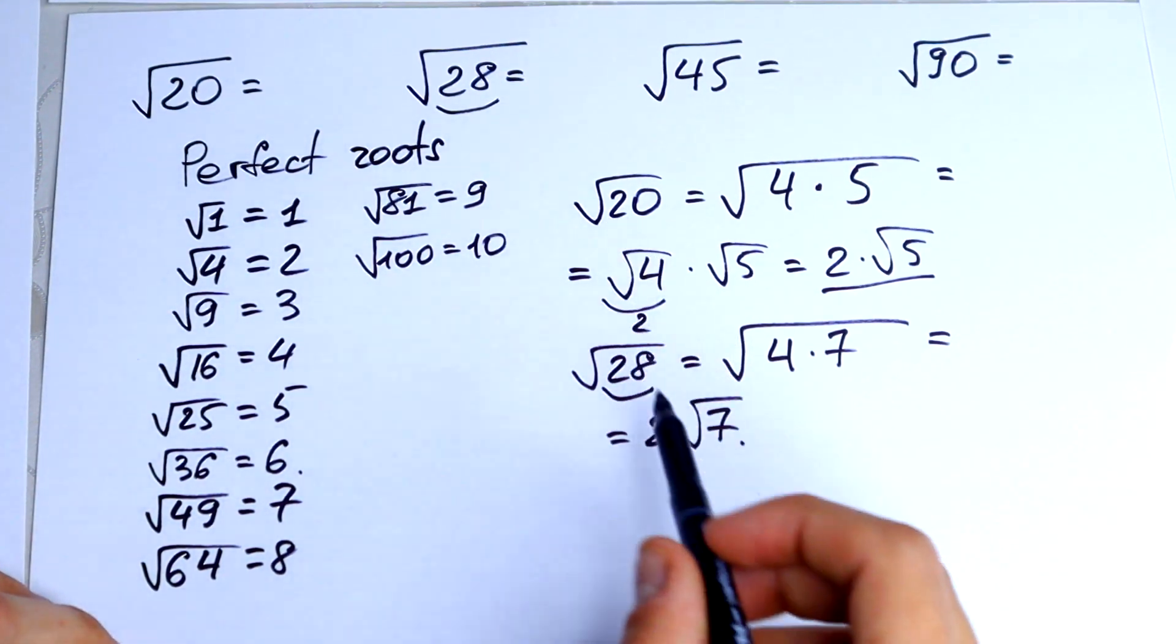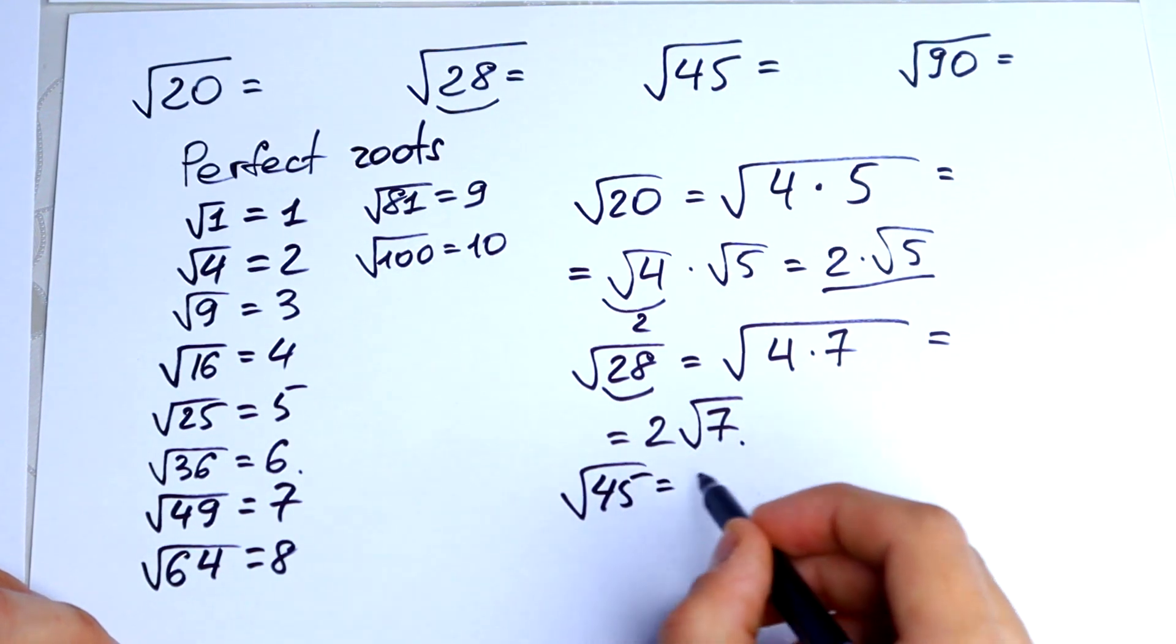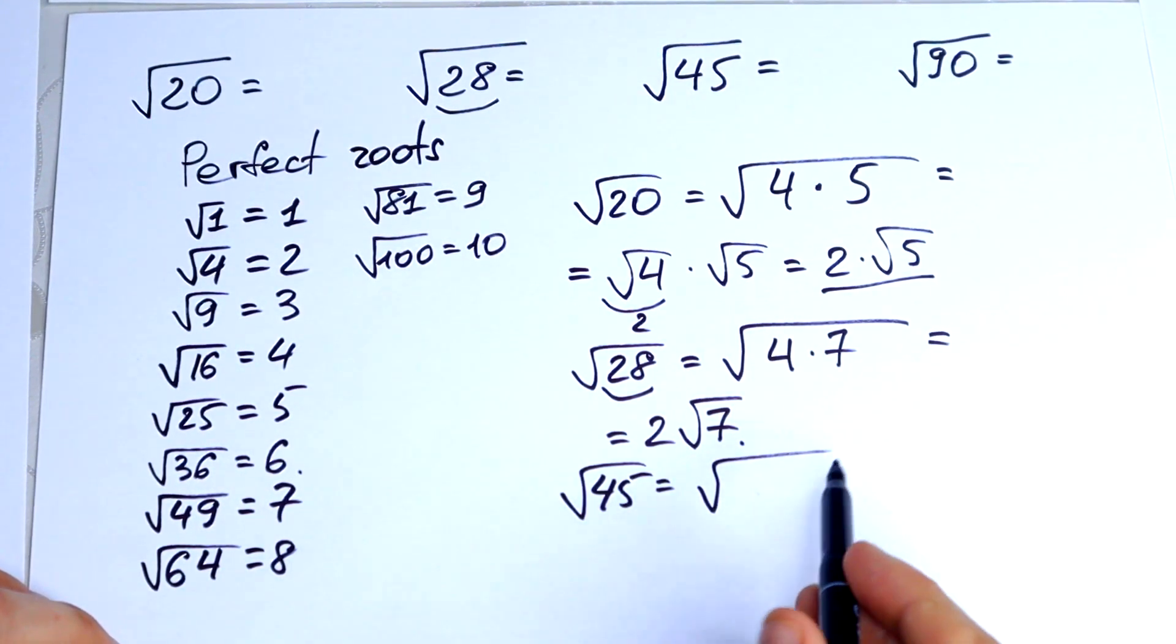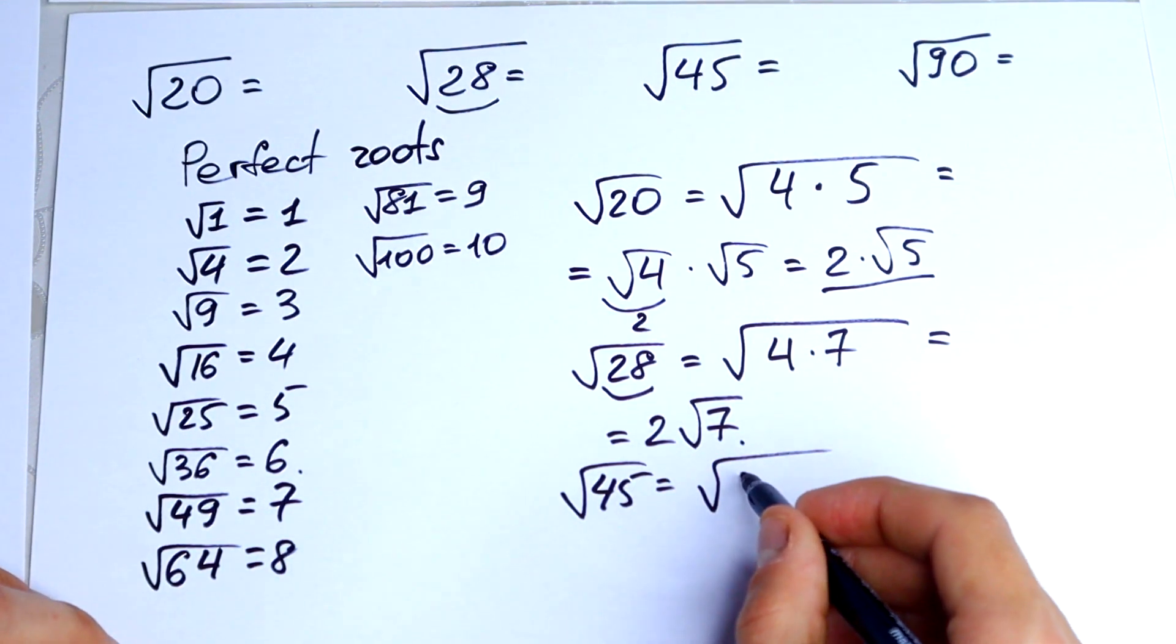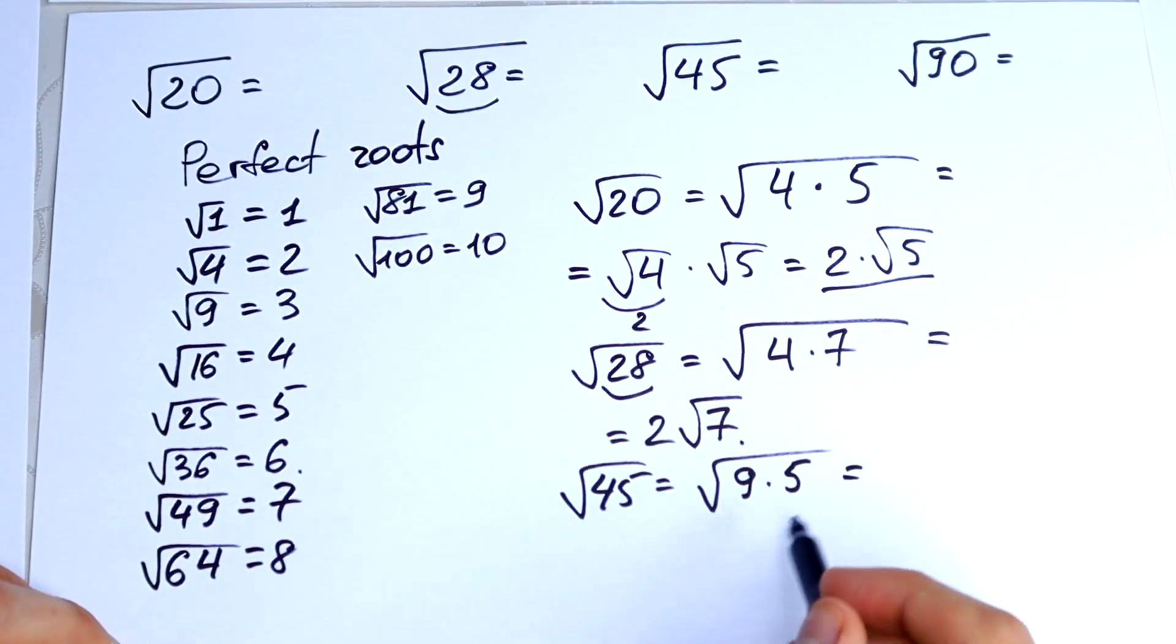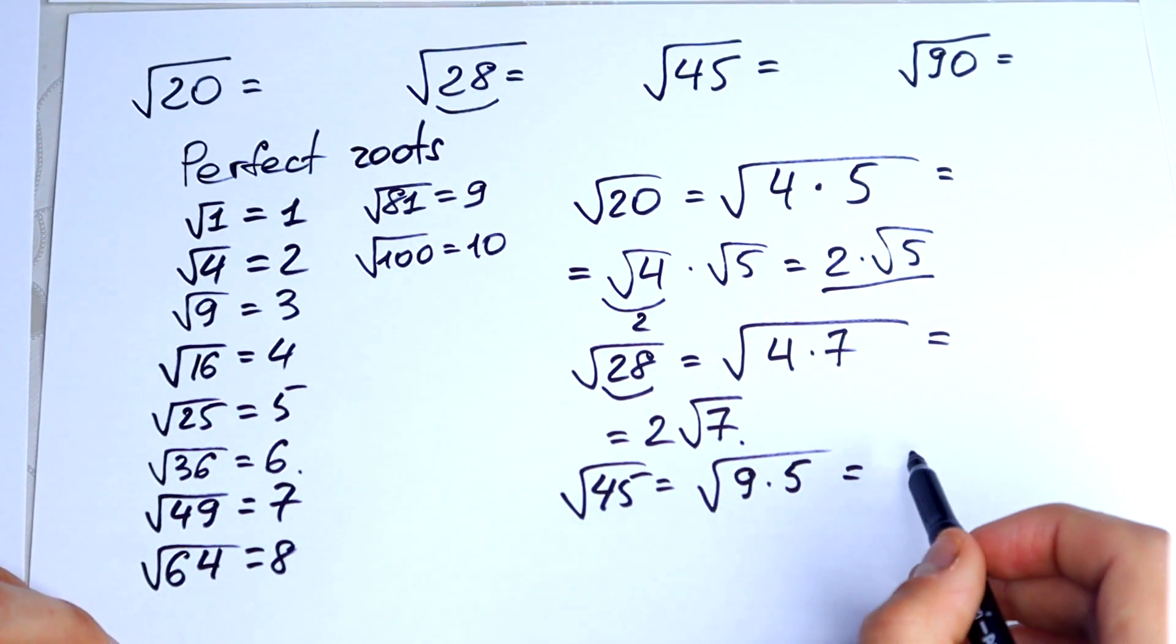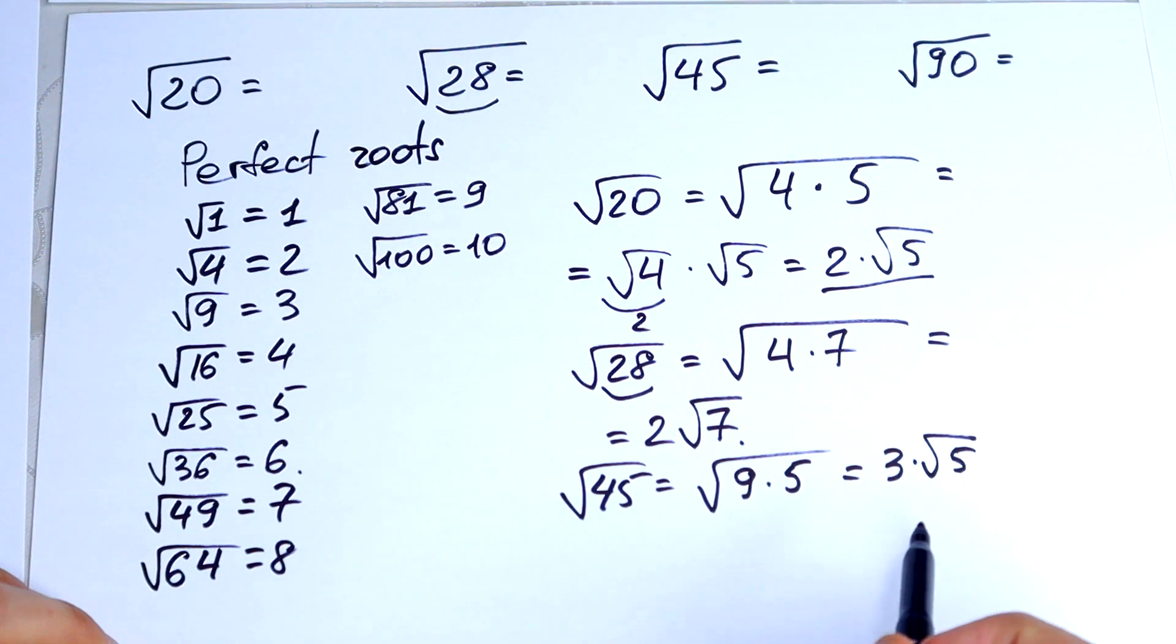And do the same thing with square root of 45. It would be equal to... We can represent it like 9 times 5. Square root of 9 we can calculate, it would be 3, times square root of 5. This 5 is left.